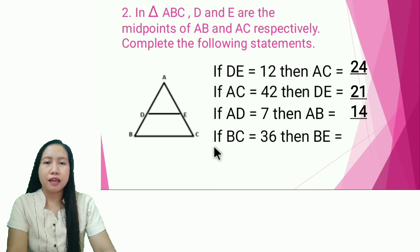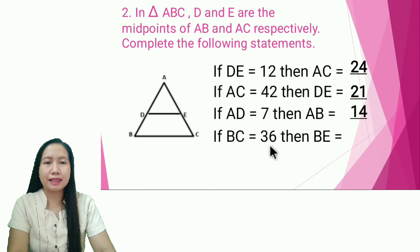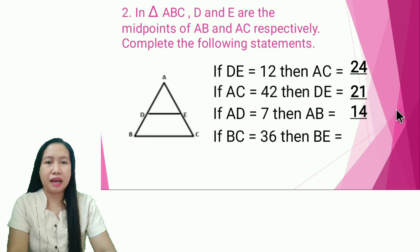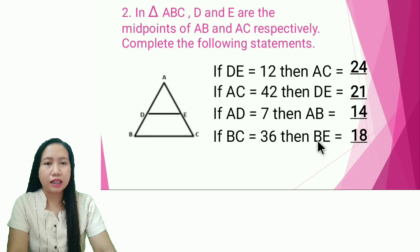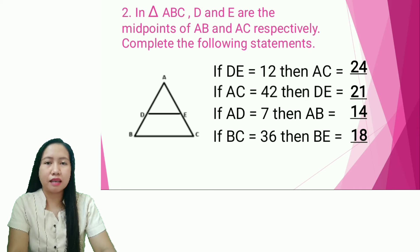Next: if line segment BC is equal to 36, then what is the measurement of line segment DE? The answer is 18. Note: this should be DE, not BDE.